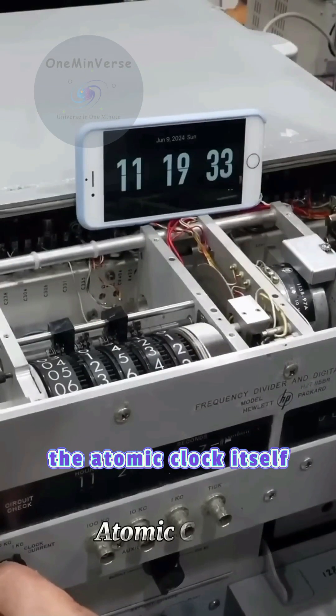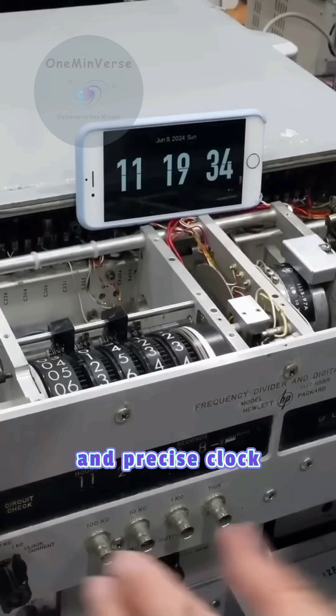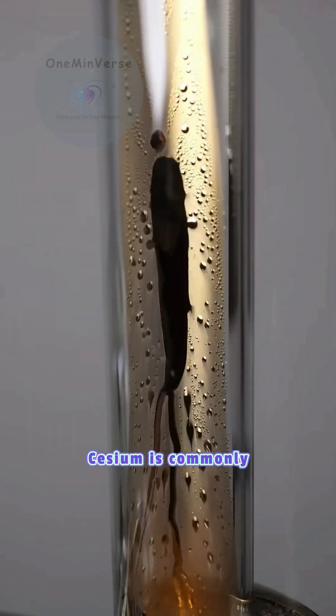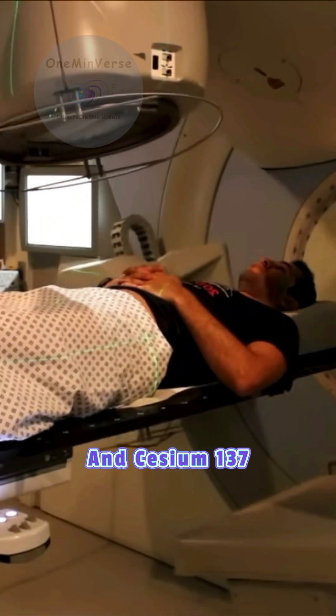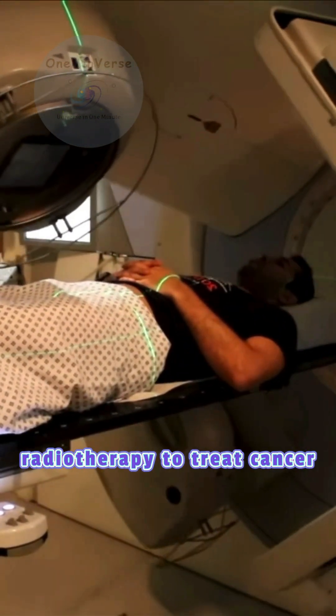The atomic clock itself is the most accurate and precise clock in the world. In addition, cesium is commonly used in photoelectric and electronic devices, and cesium-137 has been used in radiotherapy to treat cancer.